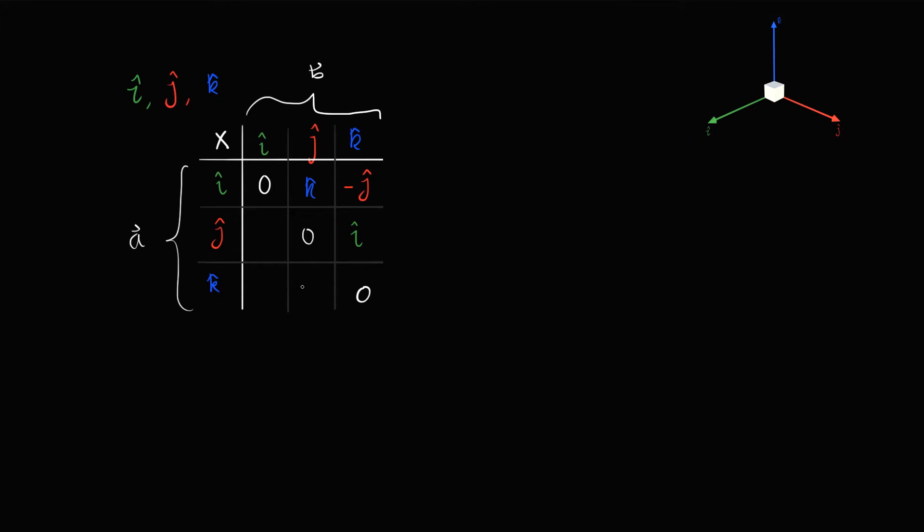To fill in this lower triangle, we're going to use the anticommutativity property. Here we have J cross I. Well, we know that that's actually just negative I cross J. So we know that this answer is going to be negative K hat. So K cross J is going to be negative J cross K negative I hat. And then, of course, J hat.